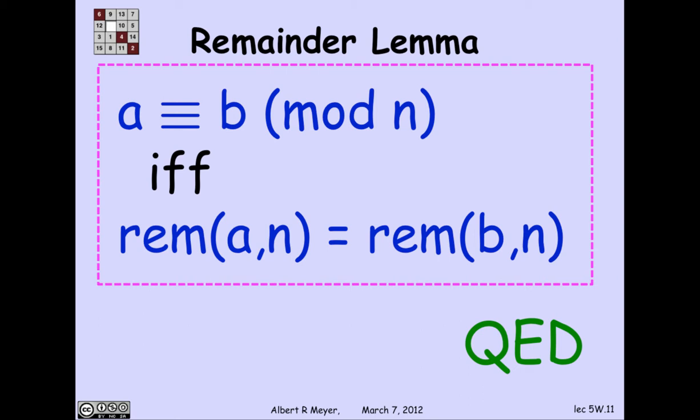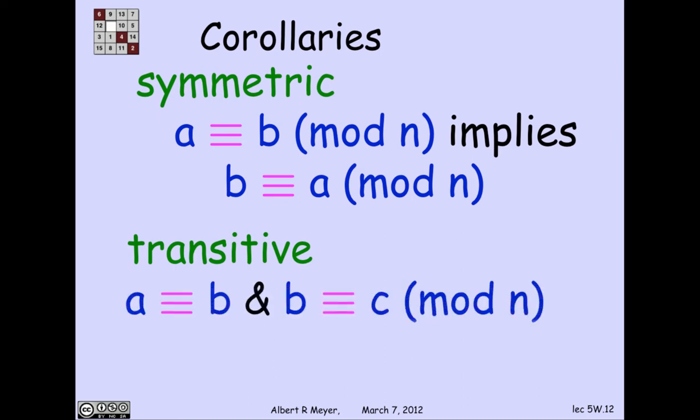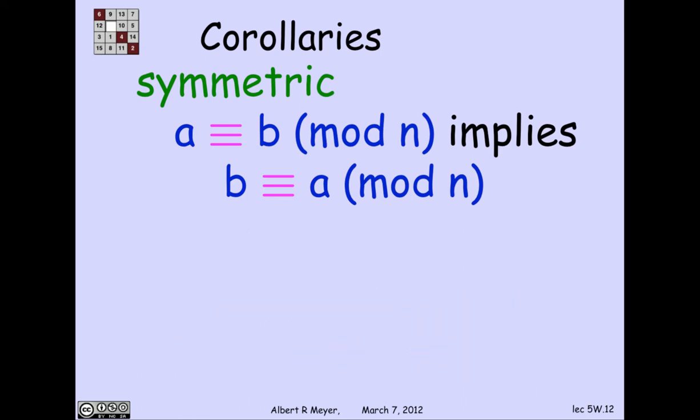Now some immediate consequences of this remainder lemma are that congruence inherits a lot of properties of equality because it means nothing more than that the remainders are equal. So for example, we can say that congruence is symmetric, meaning that if a is congruent to b, then b is congruent to a.